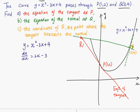At P, x is equal to 1. So the gradient is equal to 2 times 1 minus 3, and that is negative 1. Using the formula for finding the equation of a straight line, y minus y1, which is 2,